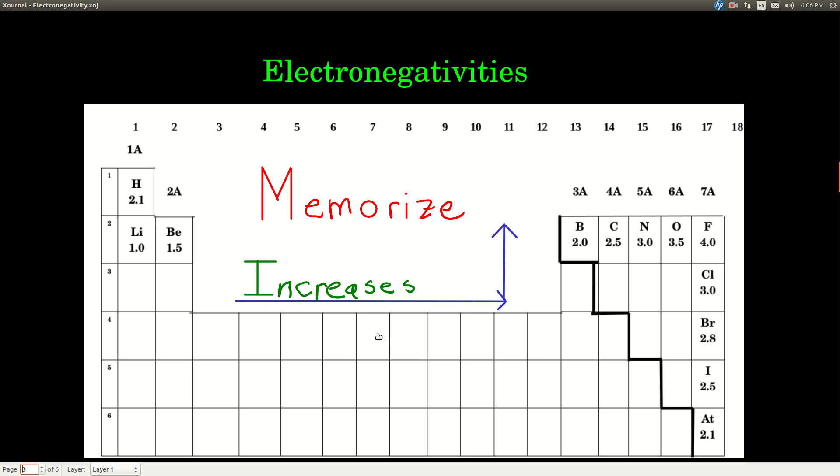So the trend is that electronegativity of an element increases as you go up and to the right in the periodic table. This does not include the noble gases. You can look up electronegativities for most of the noble gases, but generally, they don't tend to form bonds to other atoms, and so we're not going to even talk about their electronegativities. So other than the noble gases, electronegativity increases up and to the right. That means fluorine is the most electronegative element.